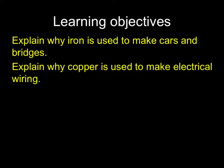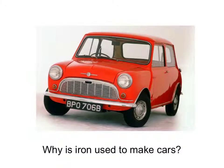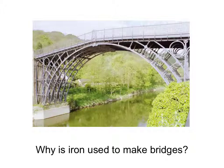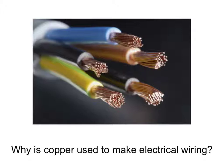First you need to be able to explain why iron is used to make cars and bridges, and why copper is used to make electrical wiring. Iron is made into cars because it's cheap, strong, and malleable — that means it can be bent into shape, as these car panels have been. Iron is used to make bridges because it's strong. Copper is used to make electrical wiring because it's an excellent electrical conductor and it's flexible, which means the wire can be bent around corners.